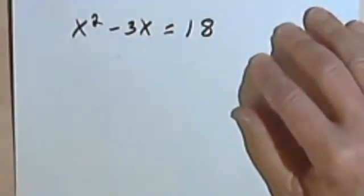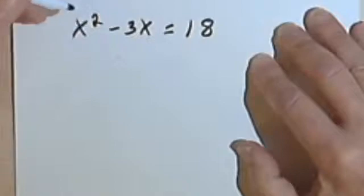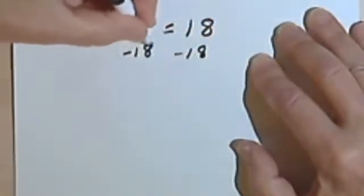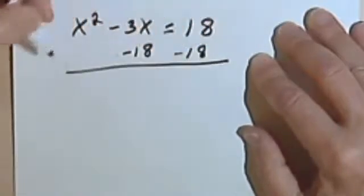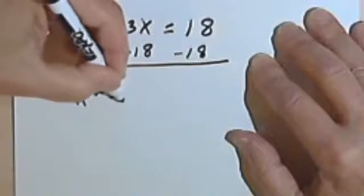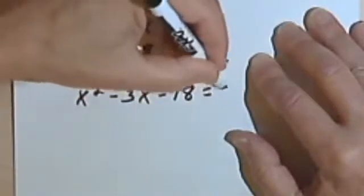Here's how we're going to do it. The first step is we want to get all the terms on one side of the equation and have the other side of the equation just equal 0. So if we subtract 18 from both sides, we'll be able to do that. I'm going to get x squared minus 3x minus 18 equals 0.